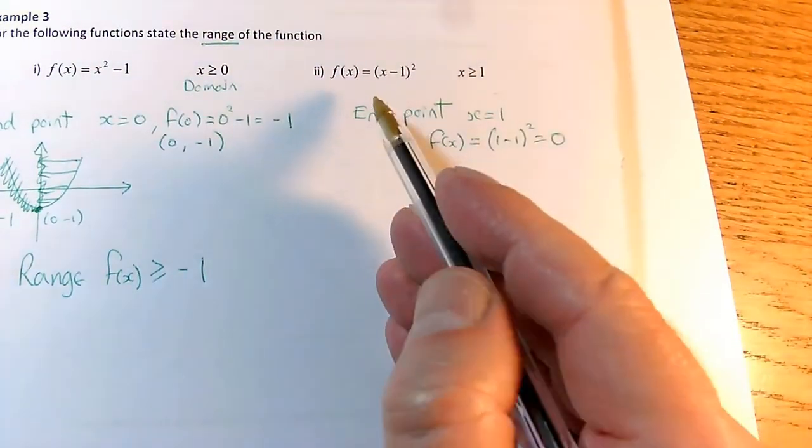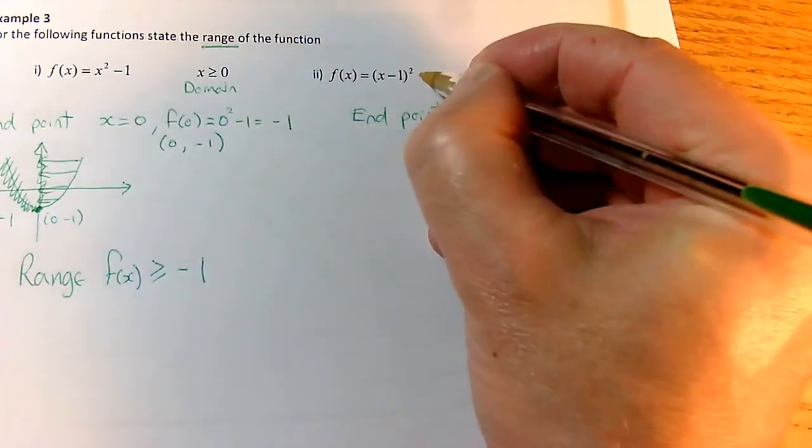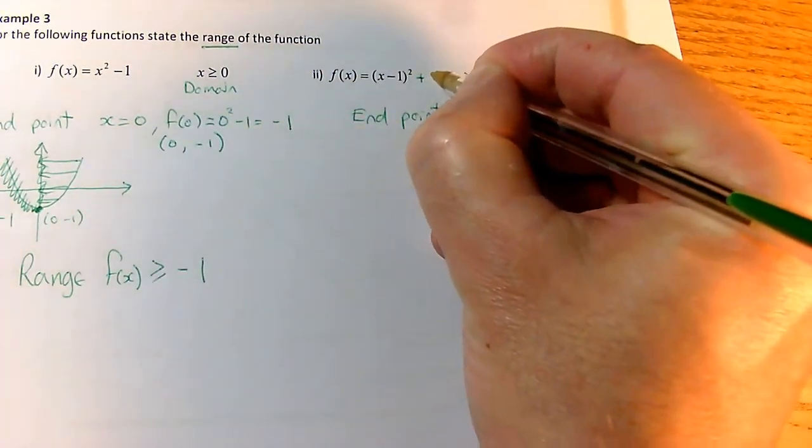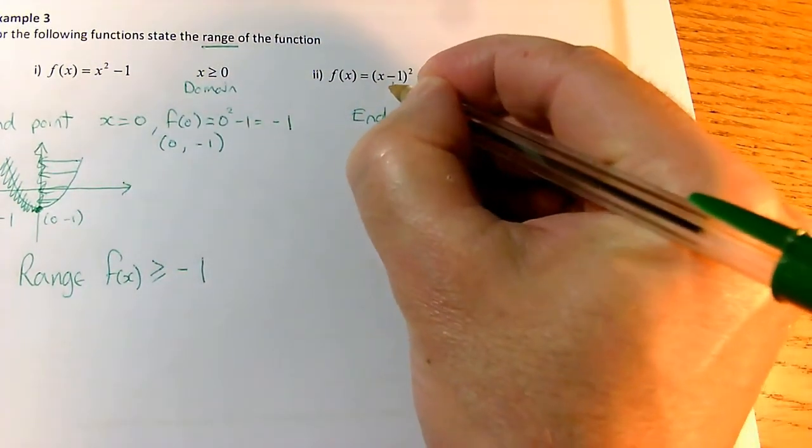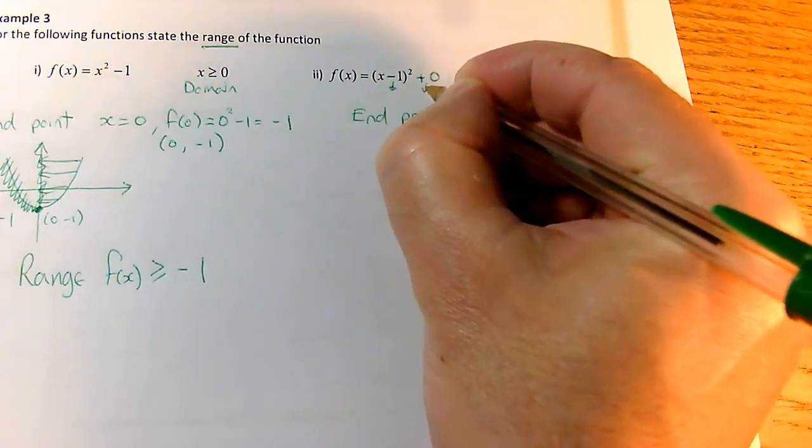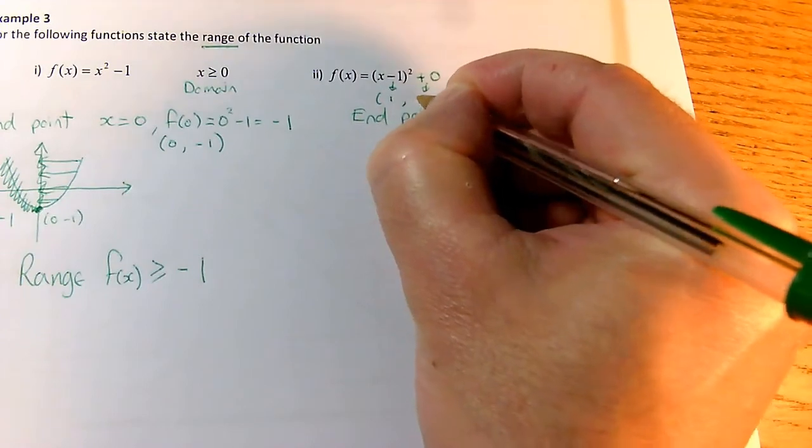And then I can use my knowledge of the graph. Now, this is in completed square form. It may not look like completed square form, but this has a plus 0 afterwards. It means I've got a squared bracket with a number at the end. So my vertex, I can see, is going to be—this is the sign swap 1—so 1 and 0.